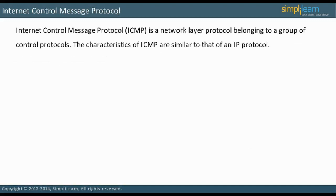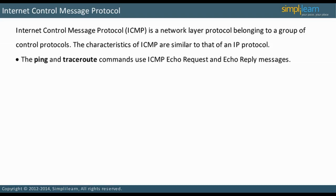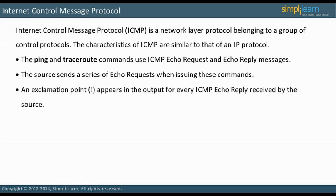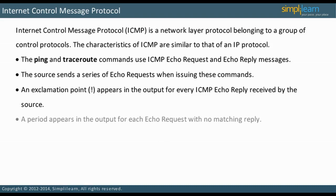Internet Control Message Protocol, ICMP, is a network layer protocol that belongs to a control protocol group and has been designed keeping the characteristics of an IP protocol in mind. ICMP echo request and echo reply messages are used by the ping and traceroute commands. When issuing these commands, the source sends a series of echo requests. For every ICMP echo reply received by the source, an exclamation point appears in the output. For each echo request with no matching reply, a period appears in the output.